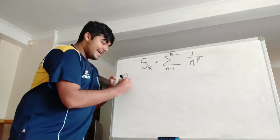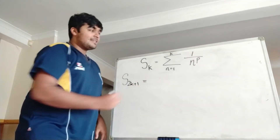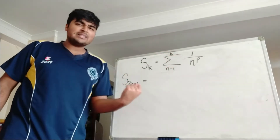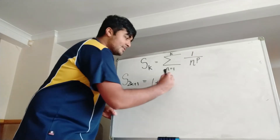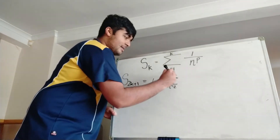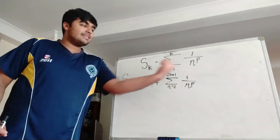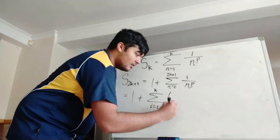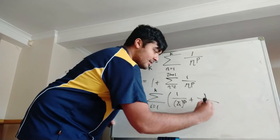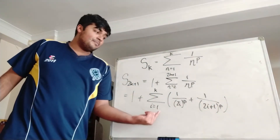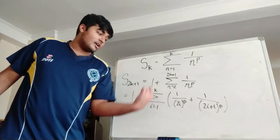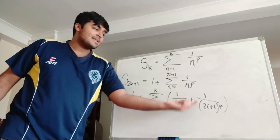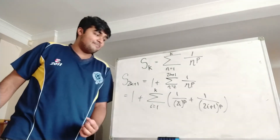The way we're going to do that is by considering S of 2k+1 — so S of an odd number. This is nothing but the sum from n equals 1 to 2k+1 of 1 over n to the p. I'm going to take out the n equals 1 term: when n equals 1, we get 1 over 1 to the p, which is always 1 regardless of what p is. So this is 1 plus the sum from n equals 2 to 2k+1 of 1 over n to the p. Now I want to write this slightly differently, as the sum from i equals 1 to k of (1 over 2i to the p plus 1 over (2i+1) to the p), because when i equals 1 we get 1 over 2 to the p and 1 over 3 to the p, all the way up to 1 over 2k to the p and 1 over (2k+1) to the p.